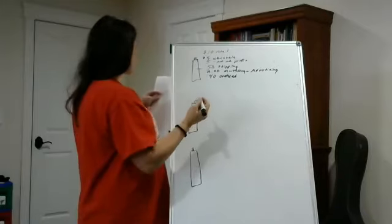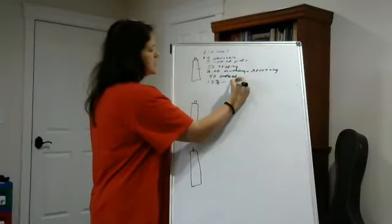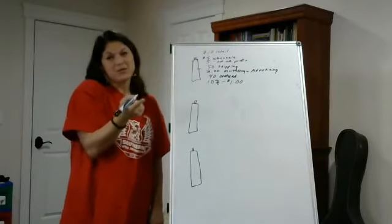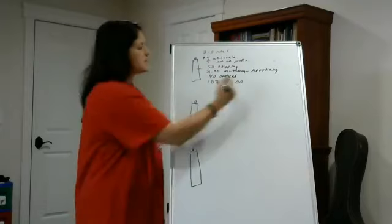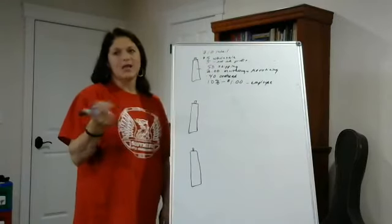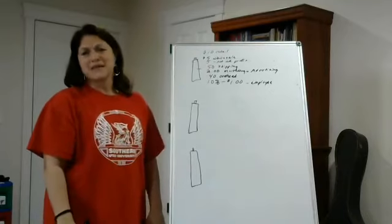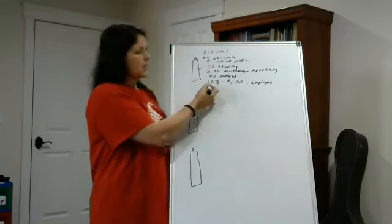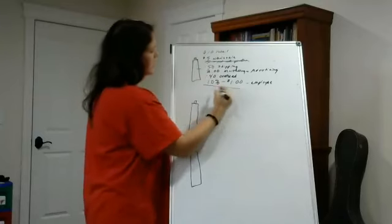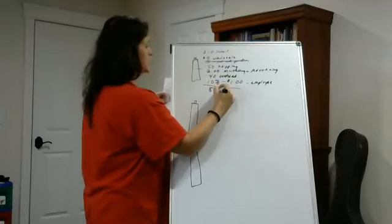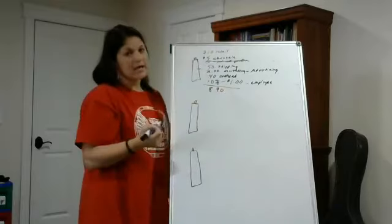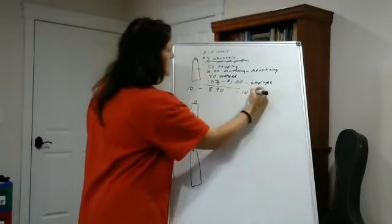Maybe you paid somebody 10% commission, which would be one dollar, because the stylist sold the shampoo. So when you add up all those costs — five dollars wholesale, 50 cents shipping, two dollars advertising, 40 cents overhead, one dollar commission — that comes to $8.90 in costs. You subtract that from ten dollars and you're left with $1.10 profit.